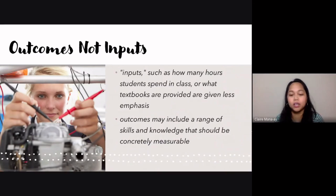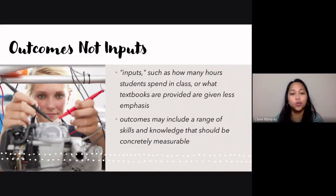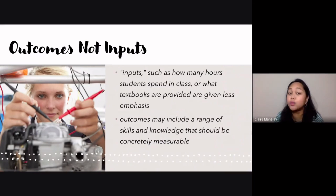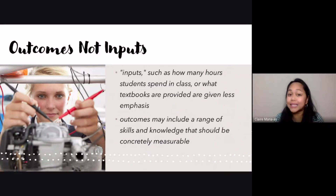Outcomes, on the other hand, include a range of skills and knowledge that should be concretely measurable. This is where the writing of our learning outcomes or learning objectives comes into play. Remember that your learning objectives should be SMART — that means they should be Specific, Measurable, Attainable by the students, Result-oriented or Relevant, and of course, Time-bound.